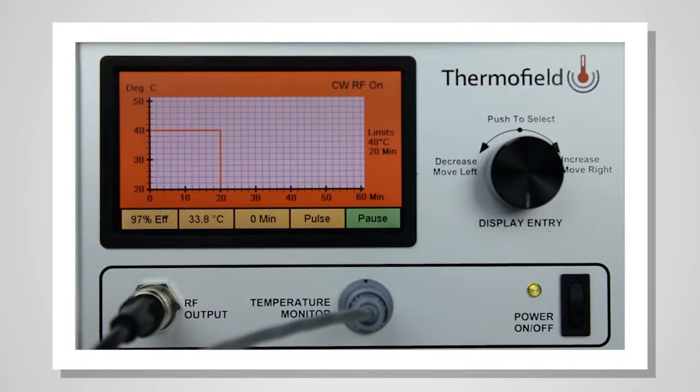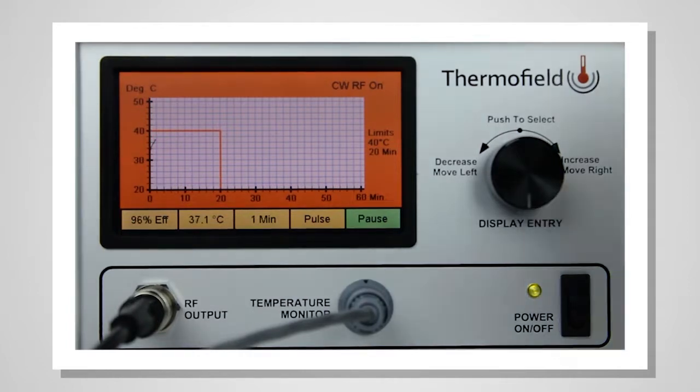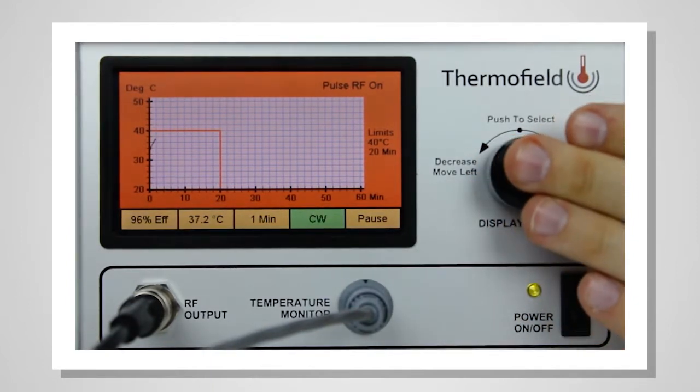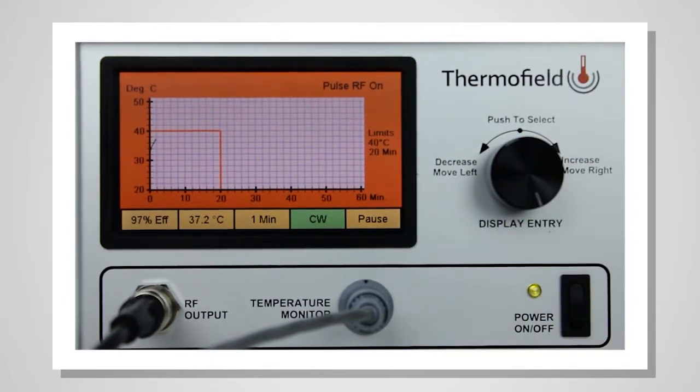At any time during the treatment, you can switch from CW to PULSE mode. Turn the knob until PULSE is highlighted. Pushing the knob will toggle between CW and PULSE.